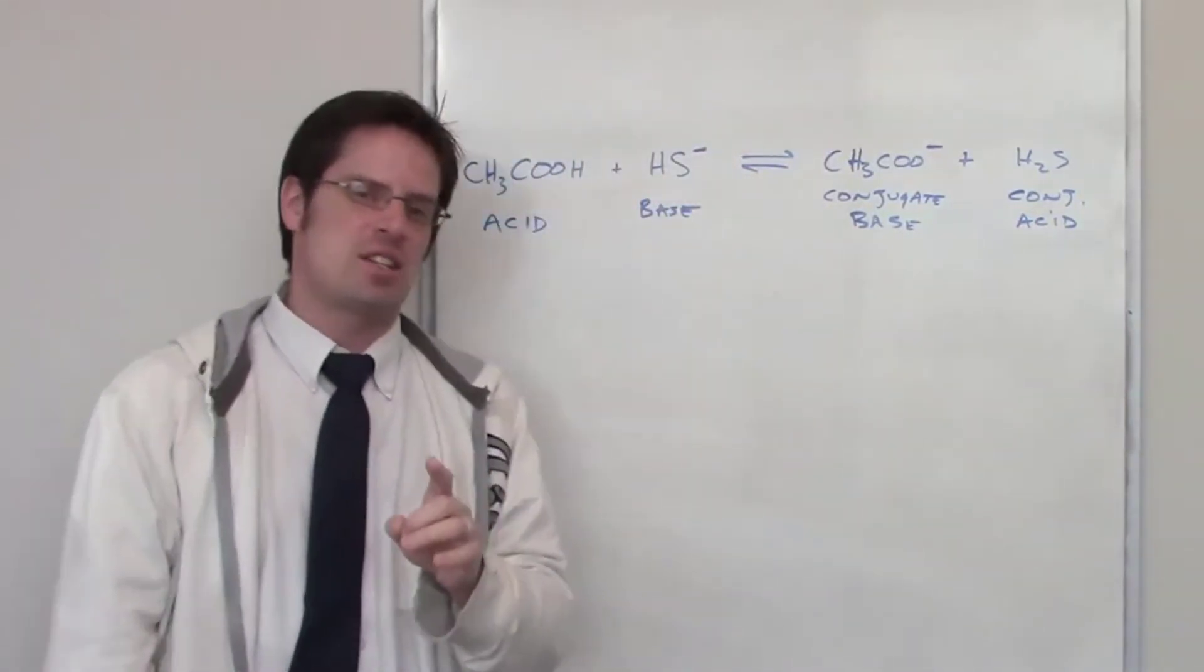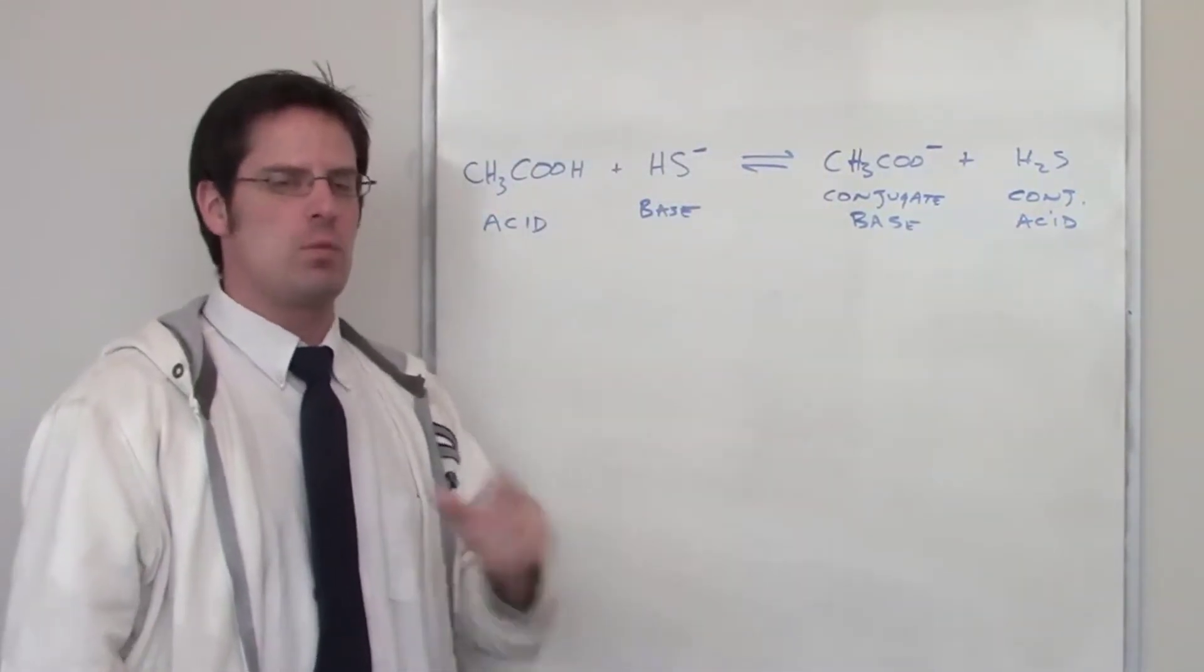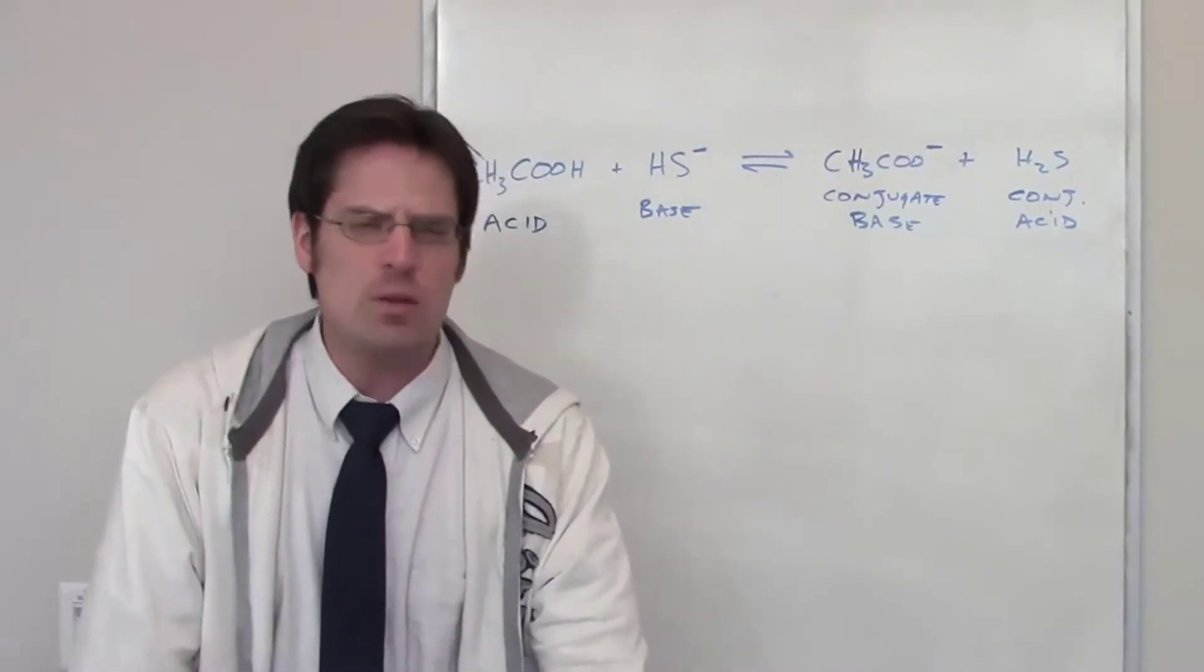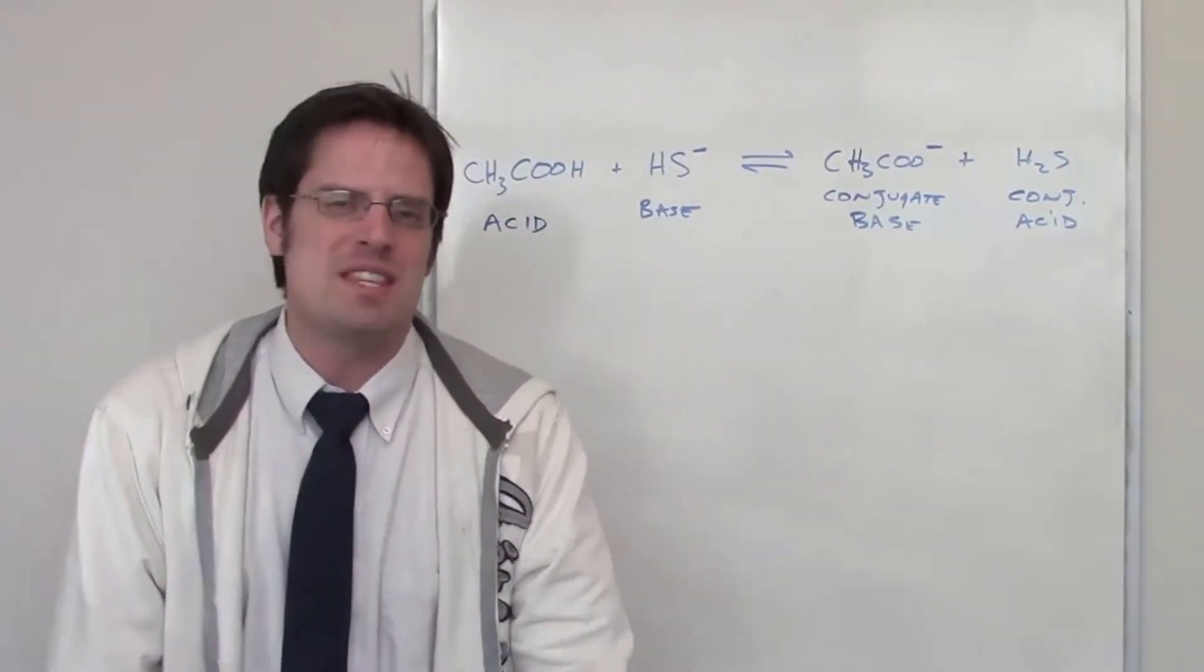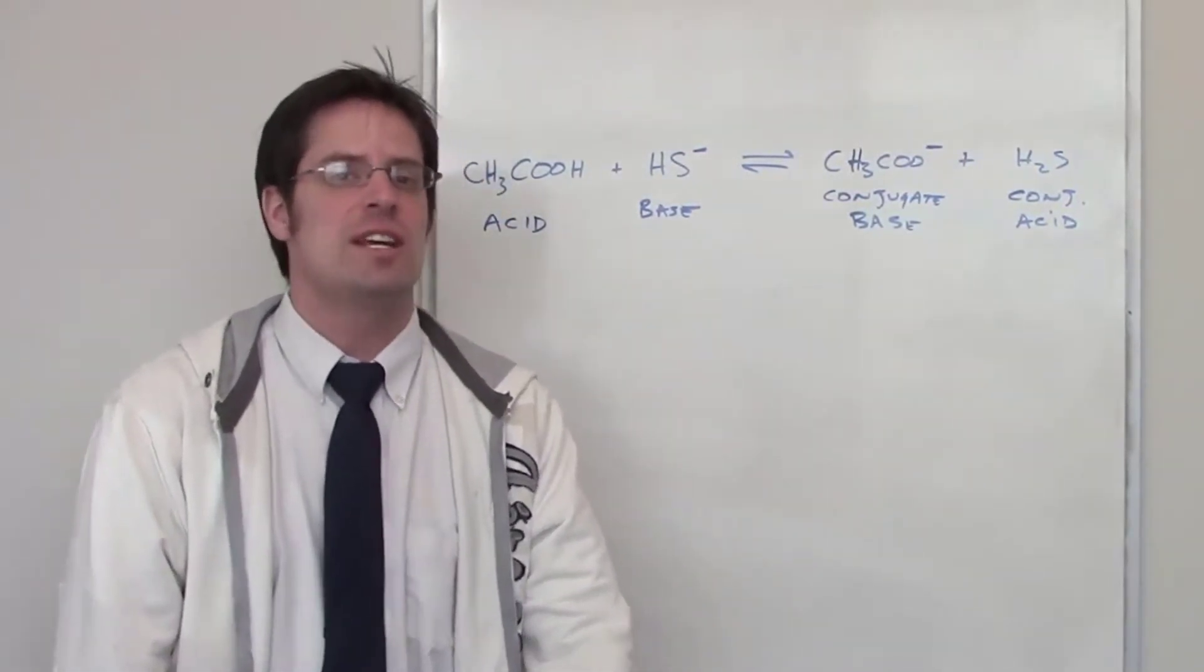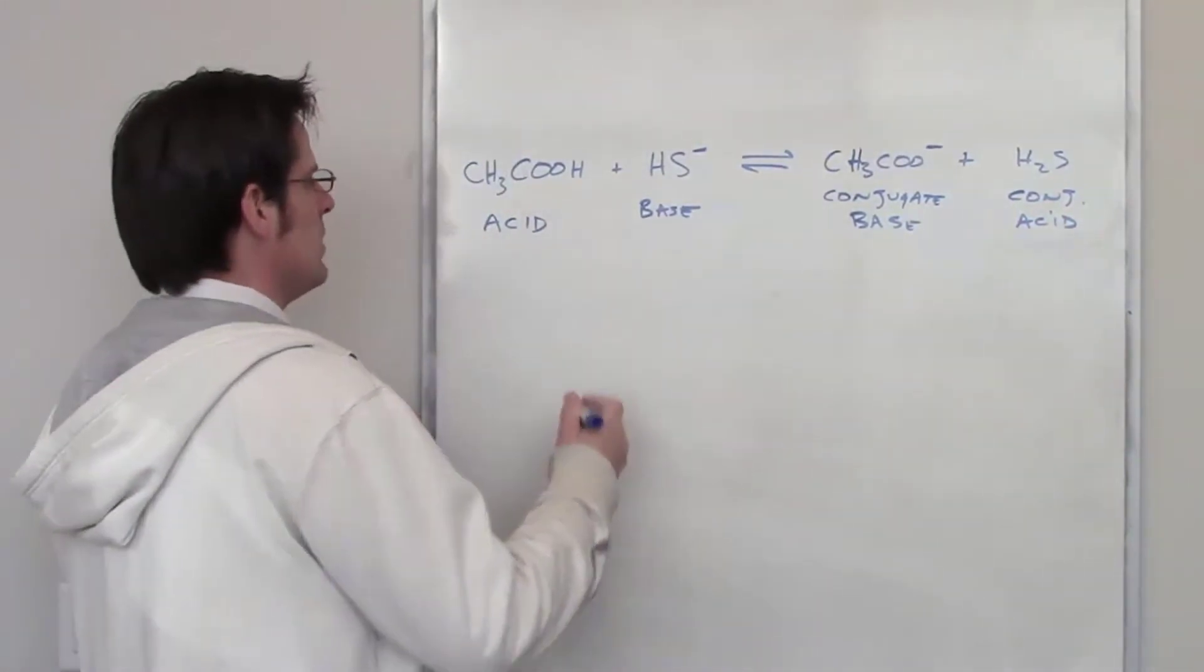The next part of this problem asks us to determine which side of the equilibrium will be favored. Remember, the equilibrium side that's favored is always going to be the side that has the weakest acid. So what acids do I have?